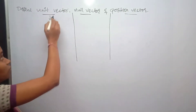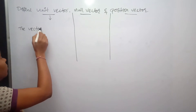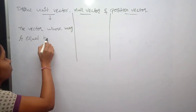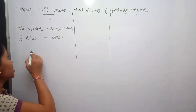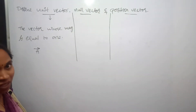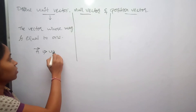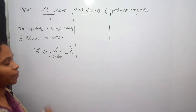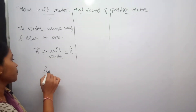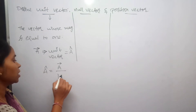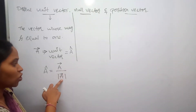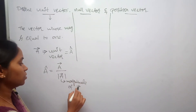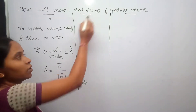Coming to the unit vector: the vector whose magnitude is equal to 1. Consider a vector A-bar. The unit vector for the vector A-bar is represented as A-cap, and is given by A-bar divided by mod A-bar, where mod A-bar represents the magnitude of the vector A-bar.